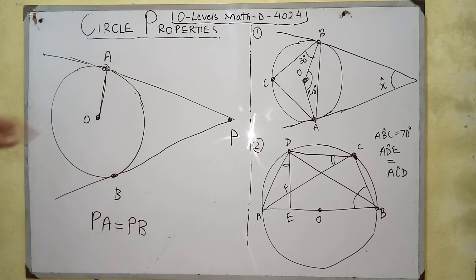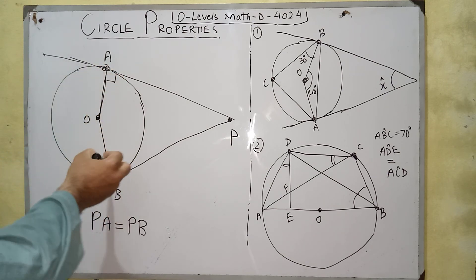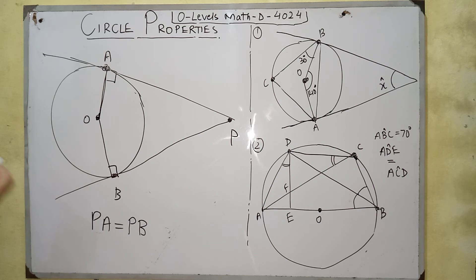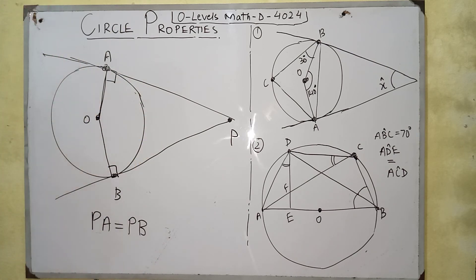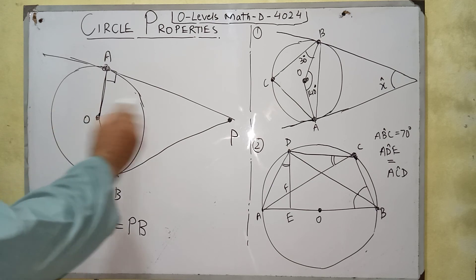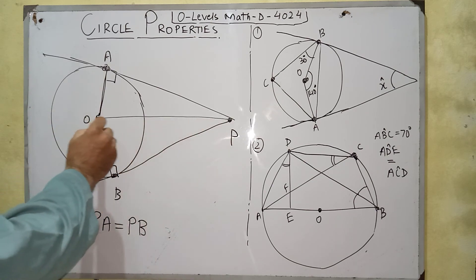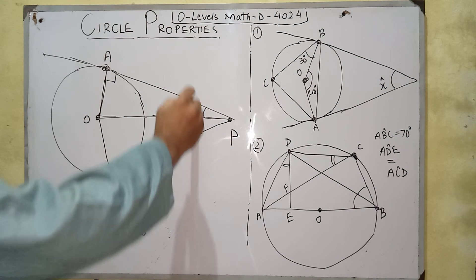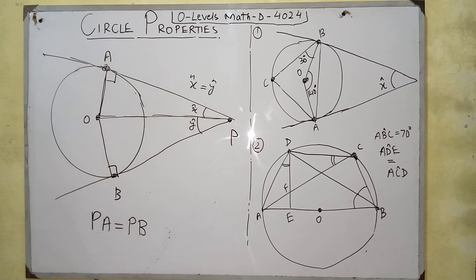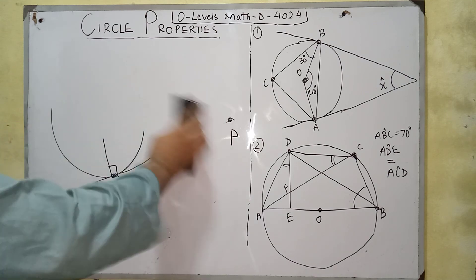The second part of the tangent property: the radius of a circle at the point of tangency is always perpendicular to the tangent. The third part: the straight line joining the center of the circle to the external point always bisects the angle between the two tangents, meaning angle X equals angle Y.